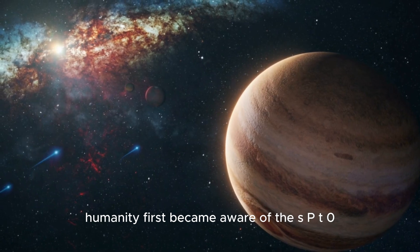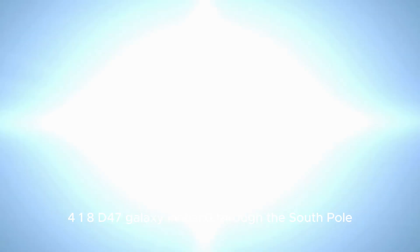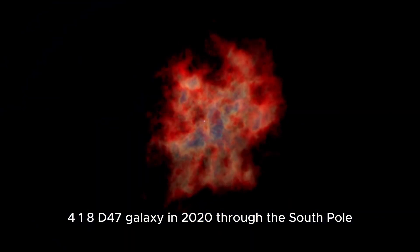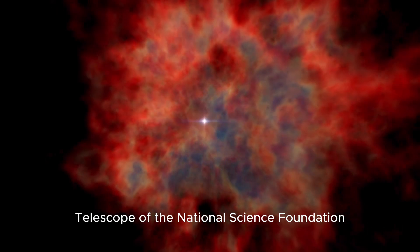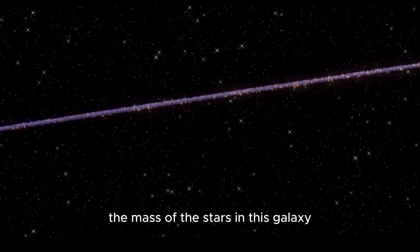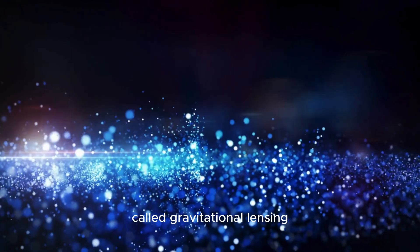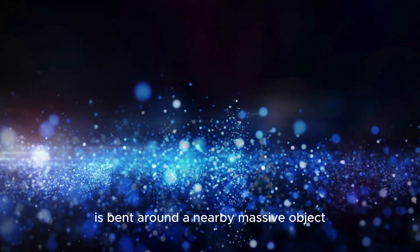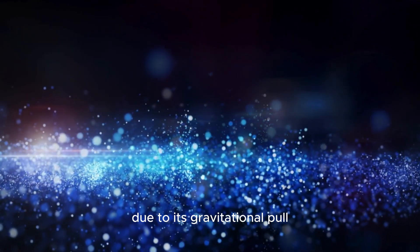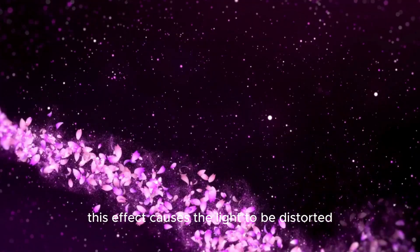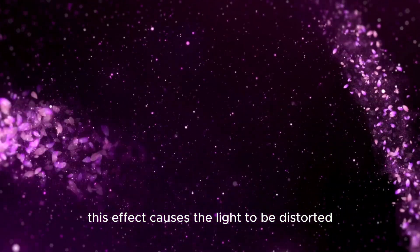Humanity first became aware of the SPT0418-D47 galaxy in 2020 through the South Pole Telescope of the National Science Foundation. The mass of the stars in this galaxy could be determined through a physical phenomenon called gravitational lensing, where light from a distant object is bent around a nearby massive object due to its gravitational pull. This effect causes the light to be distorted and amplified.